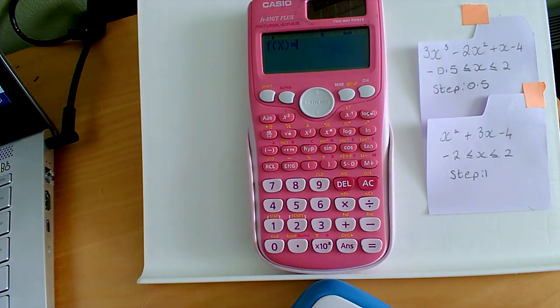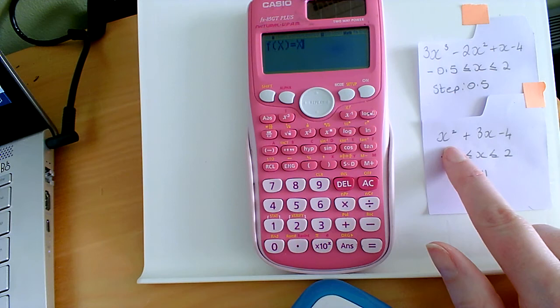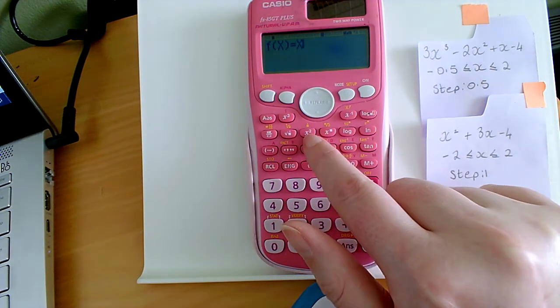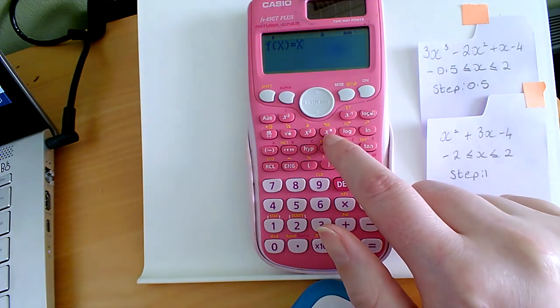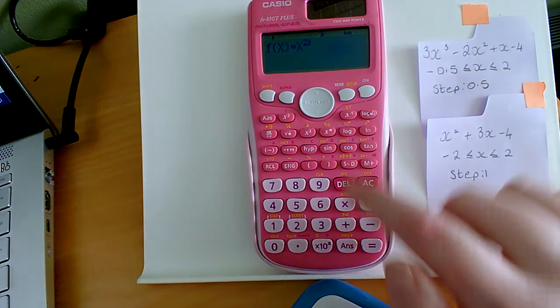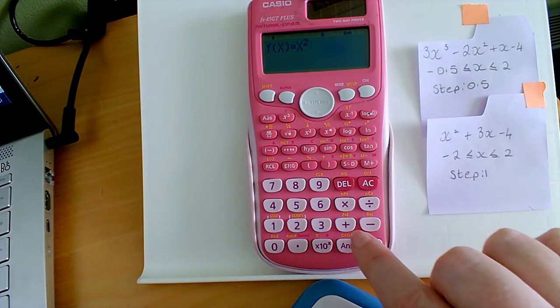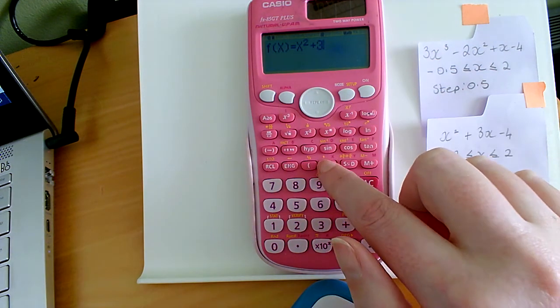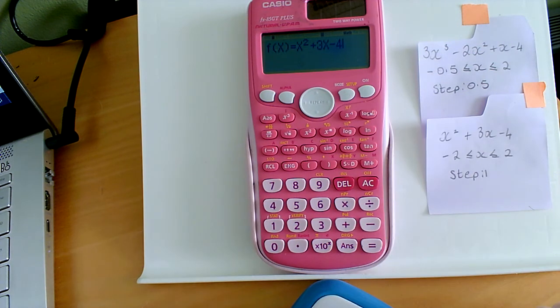We're still in our table mode. So f of x equals still appears on the screen. And I'm going to press alpha and x to get my x value up. I'm using the buttons here, x squared and x cubed. But if you can't find them on your calculator, you can use this one. So I'm going to press x squared. Just remember to use your arrow to bring your cursor across so that it's no longer in the squared position. Plus 3x. So plus 3 alpha bracket. And then take away 4. So this function is now input. So I'm just going to press the equals.